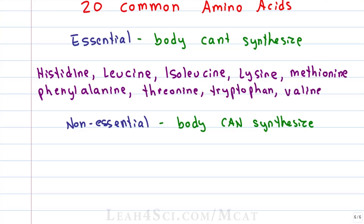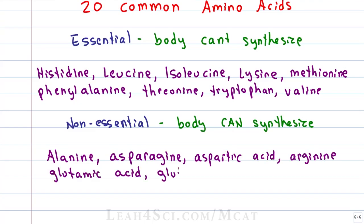The non-essential include the conditionally essential but we'll just classify them as non-essential in general which means that the body can make them depending on the circumstances. That includes alanine, asparagine, aspartic acid and arginine, glutamic acid, glutamine, glycine, proline, serine, tyrosine and cysteine.